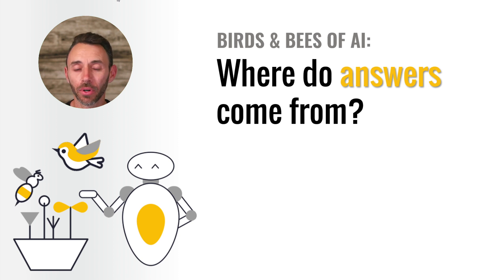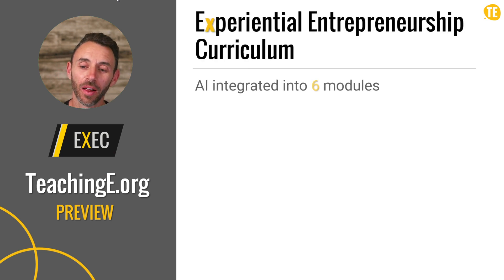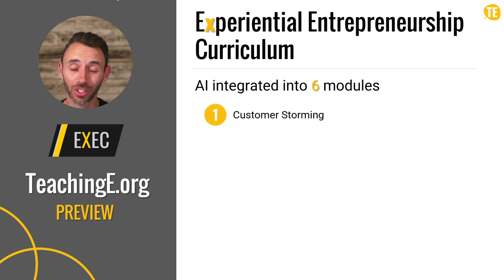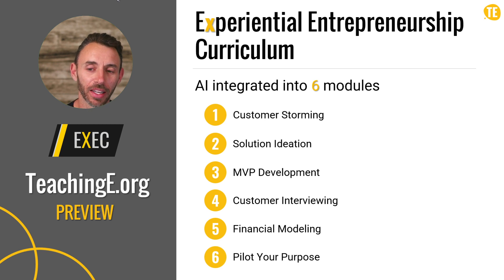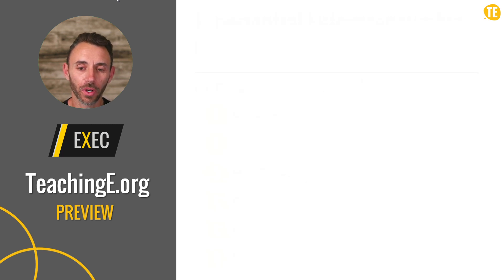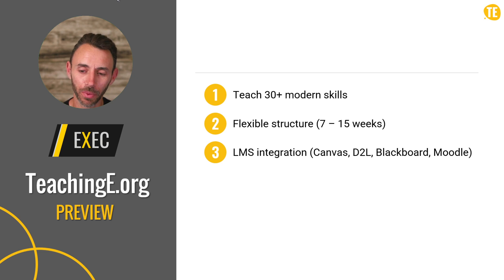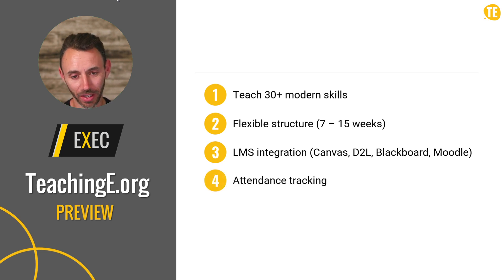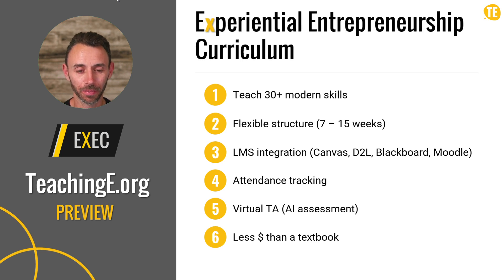You can use this as a jumping-off point for any number of lessons about AI. If you would like to use an entrepreneurship curriculum that takes full advantage of AI — including integrating AI into six different modules: customer storming, solution ideation, MVP development, customer interviewing, financial modeling, and defining a student's purpose — check out the Experiential Entrepreneurship Curriculum at teachinge.org. It teaches 30-plus modern entrepreneurship skills with a flexible schedule, whether you're in a quarter system, an MBA program, seven weeks, eight weeks, all the way up to 15 weeks or year-long programs. It includes LMS integration, advanced attendance tracking, and a virtual assistant for assessment — all for less money than a textbook.